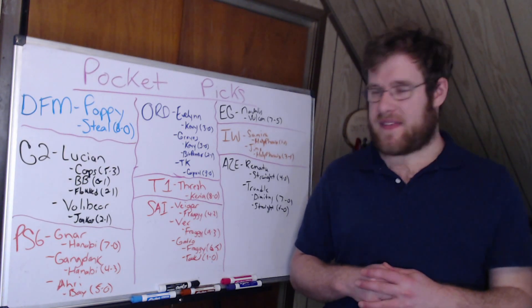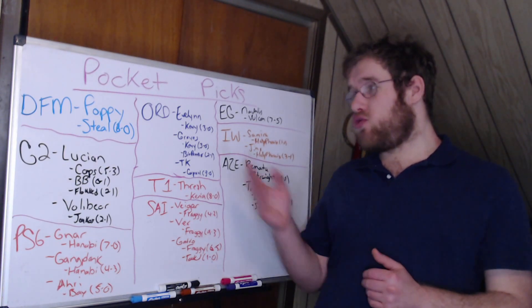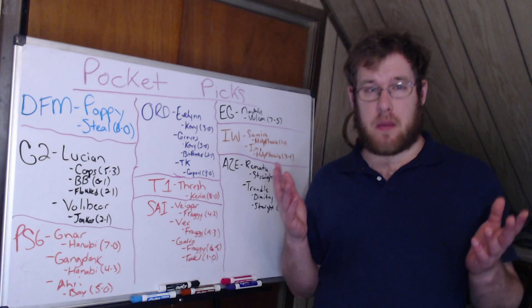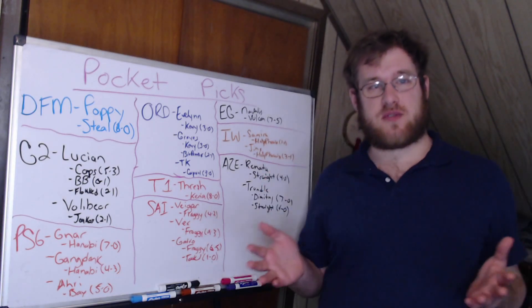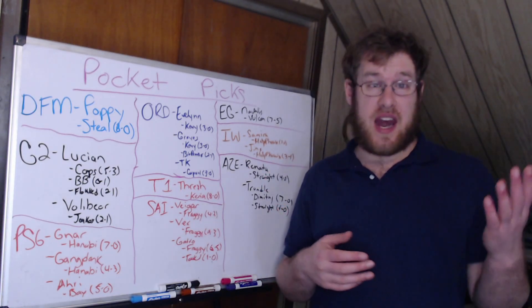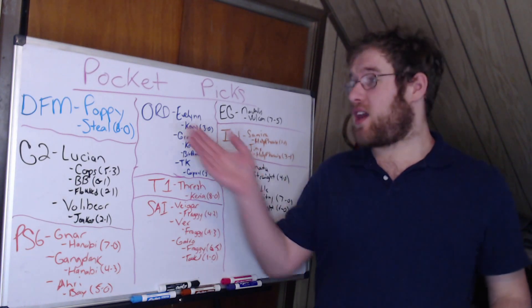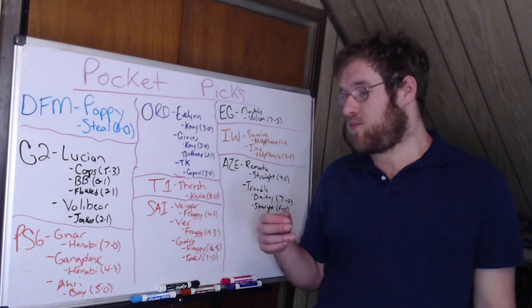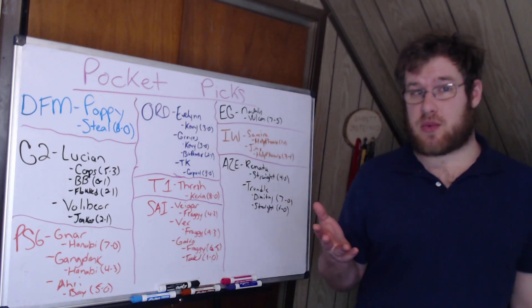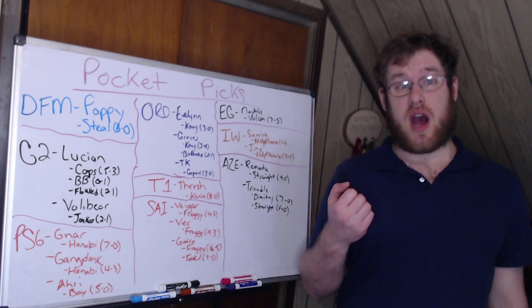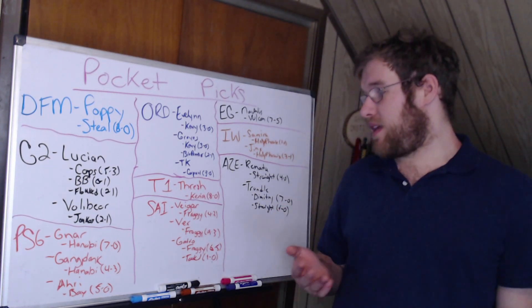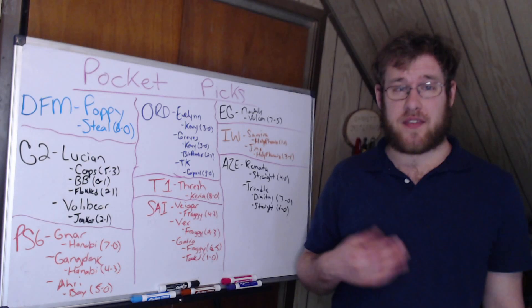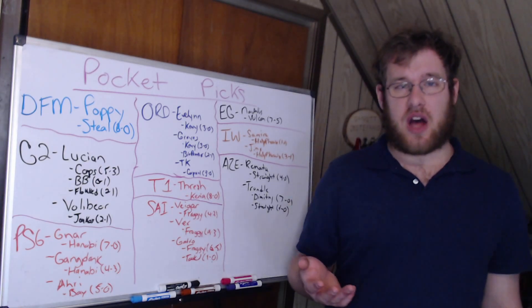So two champions that are relatively within the meta or at least in the box of champions we normally see, and then an Evelynn. Maybe they pull an Evelynn out like Poppy is going to be pulled out here. Interesting picks that we don't normally see that are highly banned against these teams in their region. T1: the Thresh, obviously all supports can play Thresh to varying degrees.